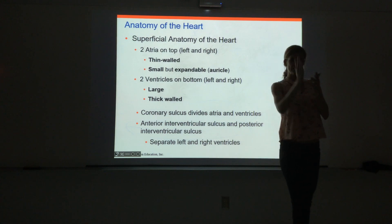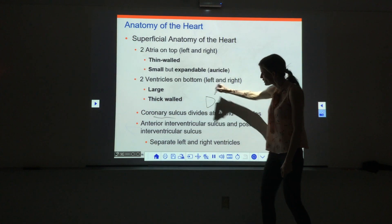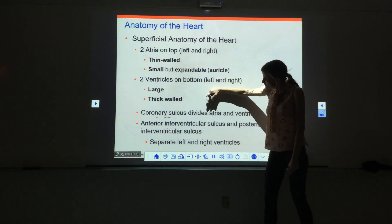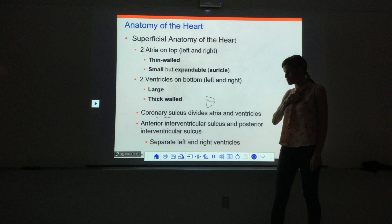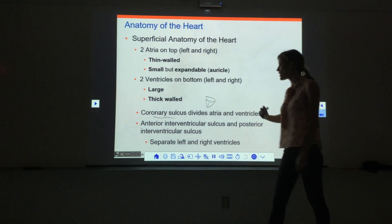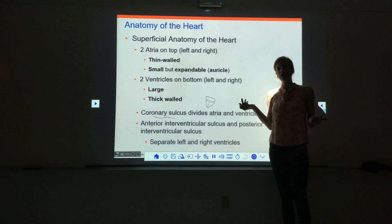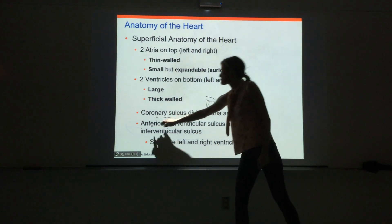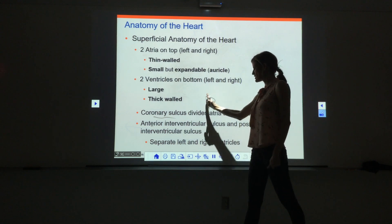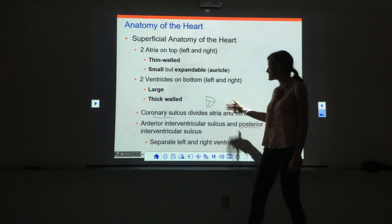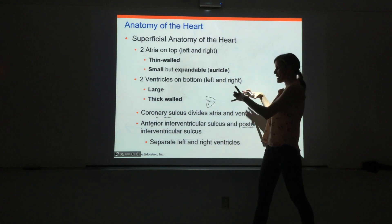There are a few grooves that divide the heart into different sections from the outside. The coronary sulcus is a horizontal groove that divides the atria from the ventricles. Then we have grooves between the ventricles: in the front is the anterior interventricular sulcus — anterior meaning front — and in the back is the posterior interventricular sulcus, both going between the left and right ventricles.